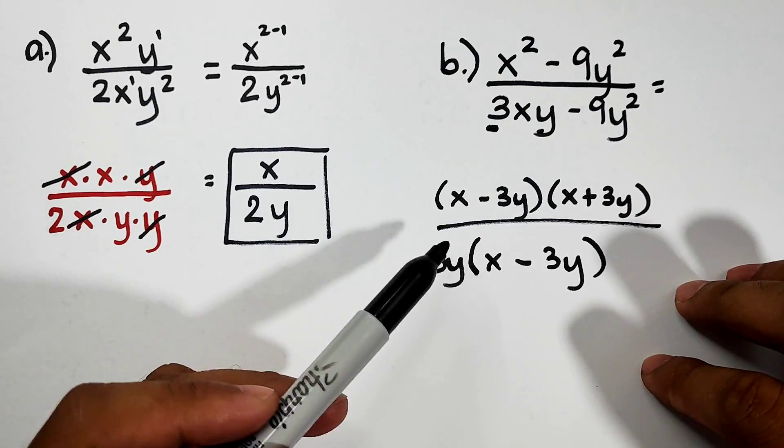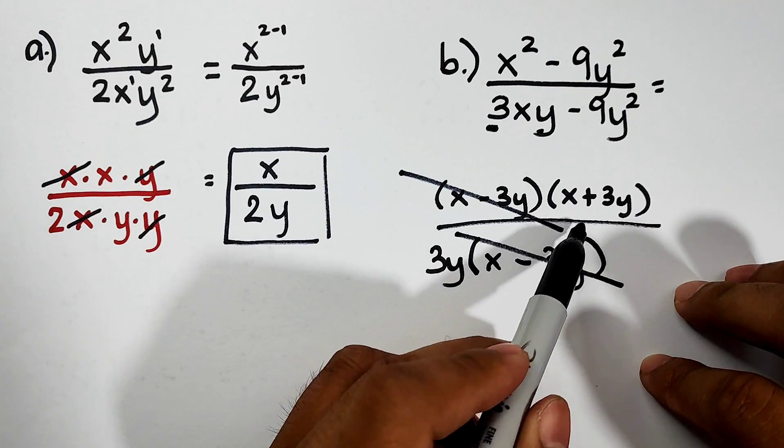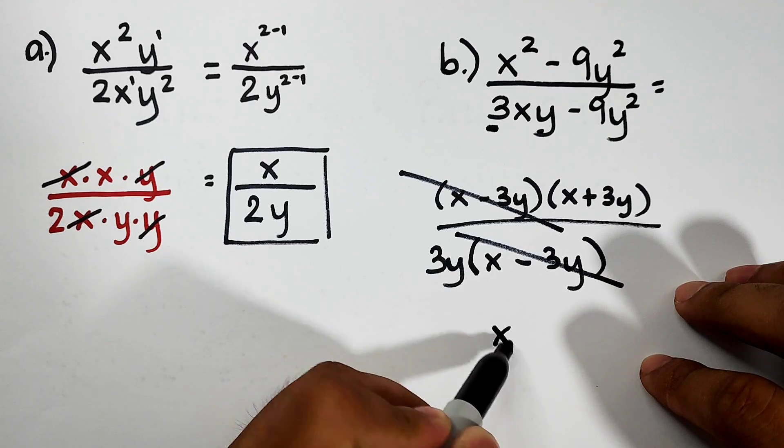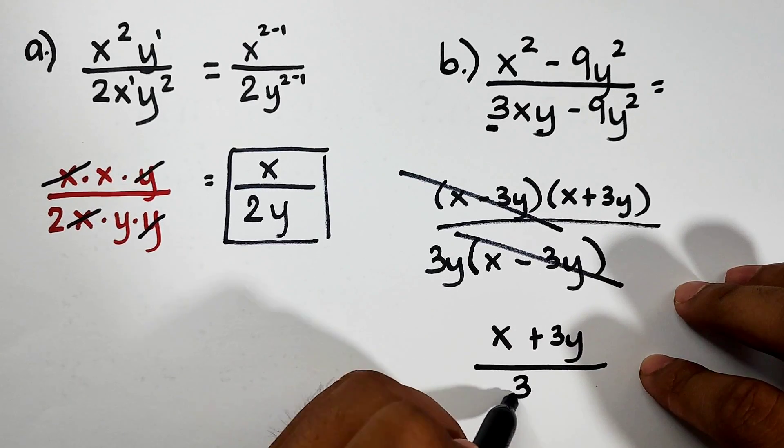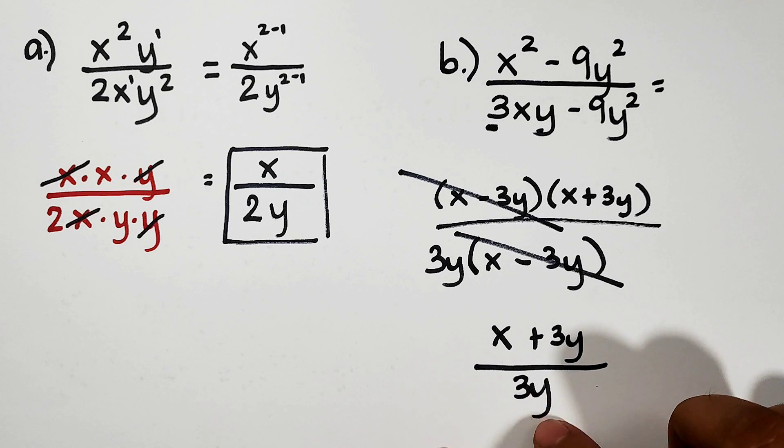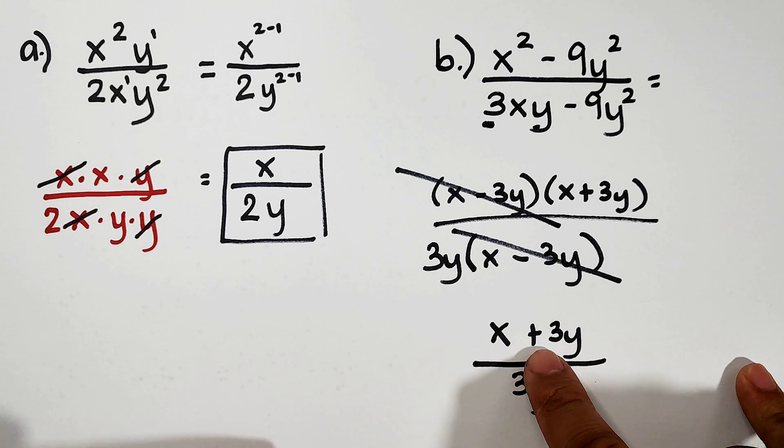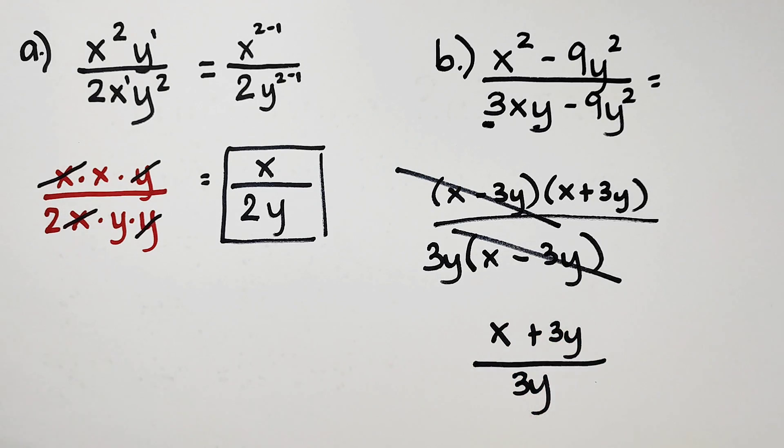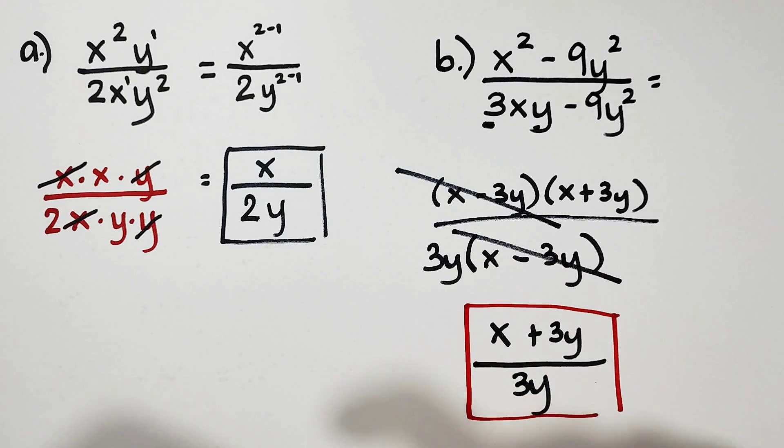Now, as you can see, we have a common factor. We can eliminate this one. And what will remain here is (x + 3y) over 3y. Can we eliminate 3y and 3y? No. We cannot cancel out 3y by the other 3y because there's another term in the numerator. If they are separated by addition or subtraction, it's not allowed. So this one is considered as the simplified form of letter B.